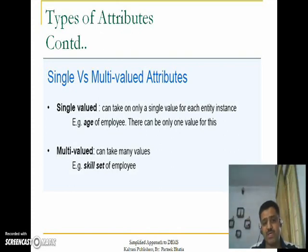But a student can have multiple Email IDs, multiple Mobile Numbers, multiple Skills. So Email ID, Mobile Number, Skills, Hobby - all these are Multi Value Attributes.